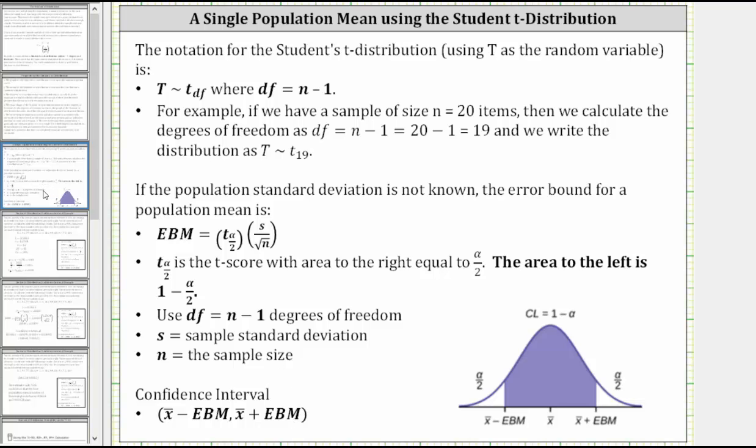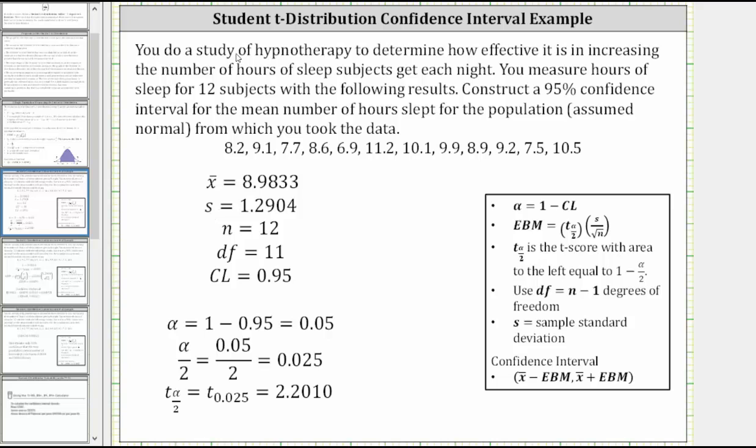Let's put all this information together and look at an example. You do a study of hypnotherapy to determine how effective it is in increasing the number of hours of sleep subjects get each night. You measure hours of sleep for 12 subjects with the following results. Construct a 95% confidence interval for the mean number of hours slept for the population assumed normal from which you took the data.